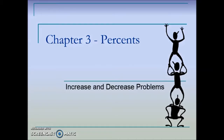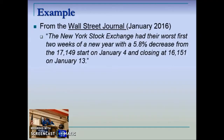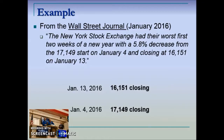In section 3.5 we're going to take a look at some special increase/decrease problems where we don't know the original and the new value. Here's an example from the Wall Street Journal: the New York Stock Exchange had their worst first two weeks of a new year, with a 5.8 percent decrease from 17,149 points on January 4th and a closing at 16,151 on January 13th. This is complete information — we have the before and after, and the percent change. The problems in section 3.4 had the original and the new value and asked us to solve for the percent. Here we're looking for one of the missing numbers.